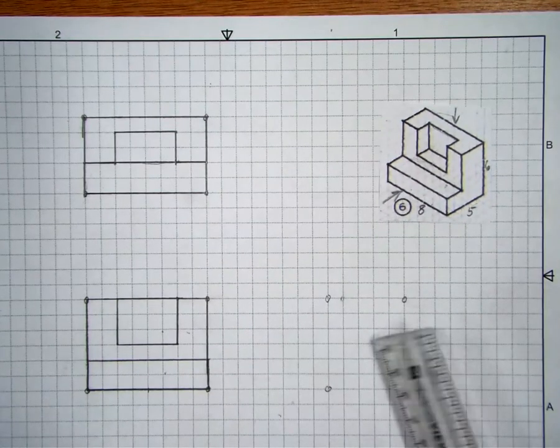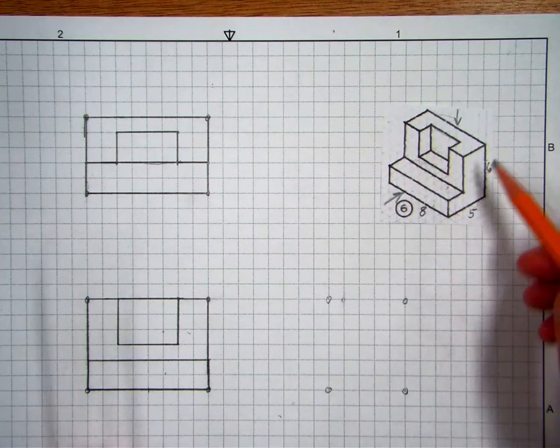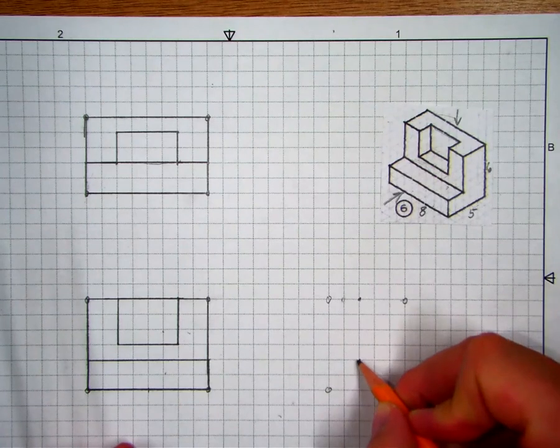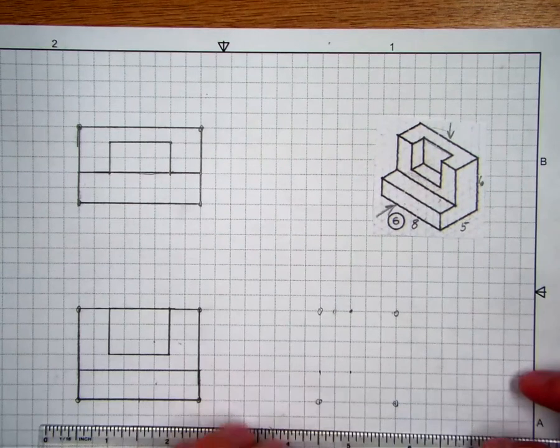Alright. And last but not least, we're going to do the right side view. The right side view, I'm going to see this big L shape right there. So that goes three blocks in. That leaves two blocks. So kind of these points right here is that L shape.